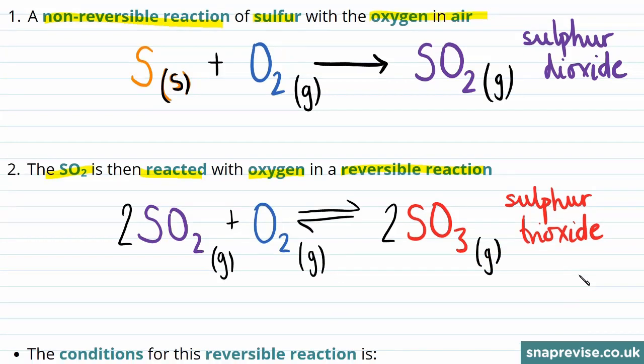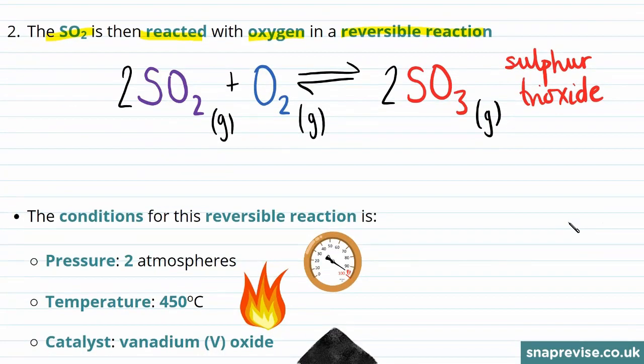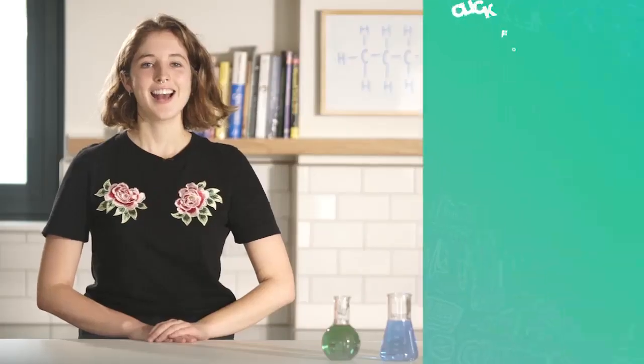This reversible part of the contact process is done under specific conditions. These conditions include a pressure of two atmospheres, which is double that of atmospheric pressure.